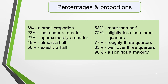Often numerical data is expressed as percentages, and you can use approximations to present this data in a different way. Here are some examples: 6% is a small proportion; 23% is just under a quarter; 27% is approximately a quarter; 48% is almost a half; 50% is exactly a half; 53% is more than half; 72% is slightly less than three quarters; 77% is roughly three quarters; 85% is well over three quarters; and 96% is a significant majority.